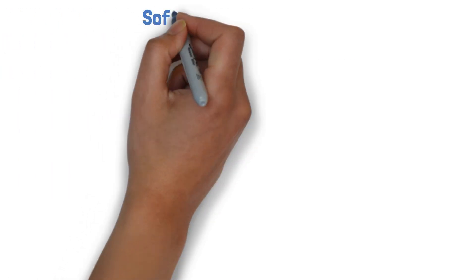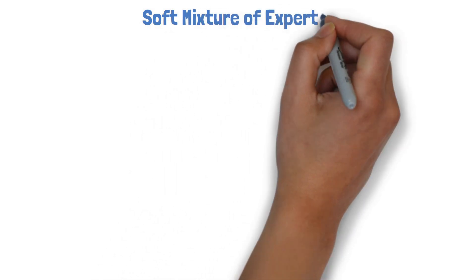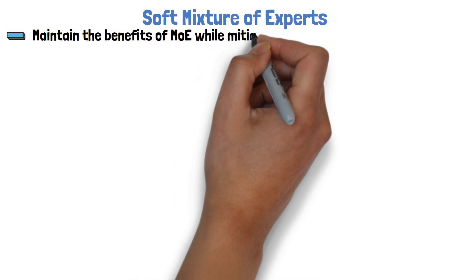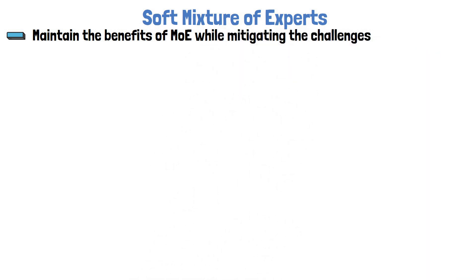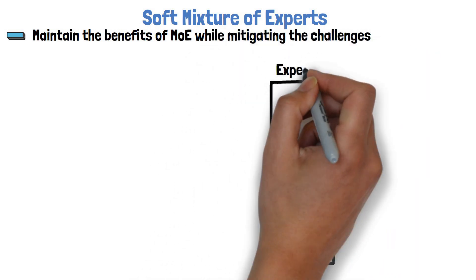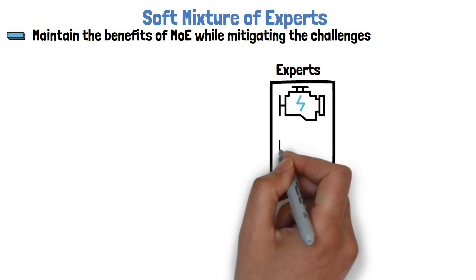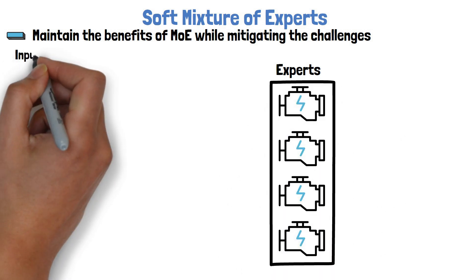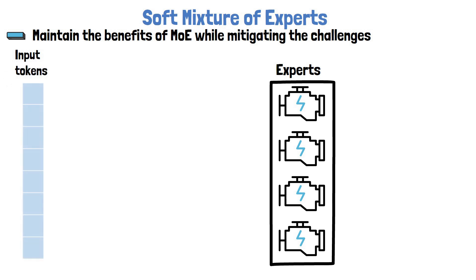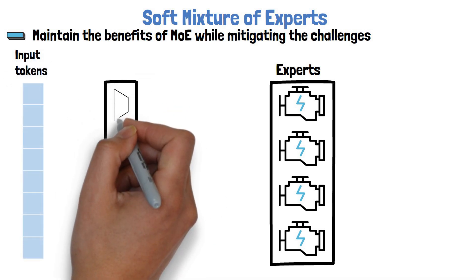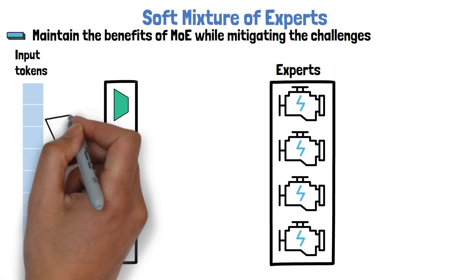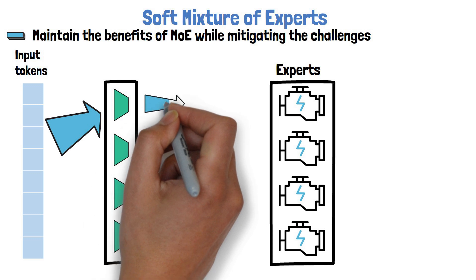Let's now move on to understand what is Soft Mixture of Experts. The goal here is to maintain the benefits of Sparse Mixture of Experts while mitigating the challenges. We still have the layer of experts as before, and we use the same number of experts for simplicity. But now, given the input tokens, instead of passing each one of them via a Router component, we have weights for each expert, and we pass all of the input tokens via each expert's weights to yield the input for the expert.